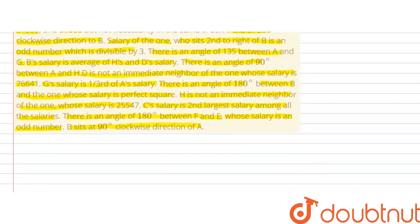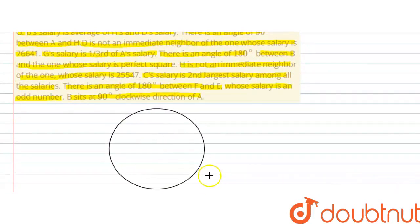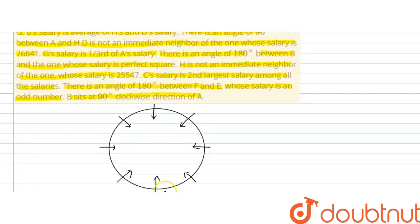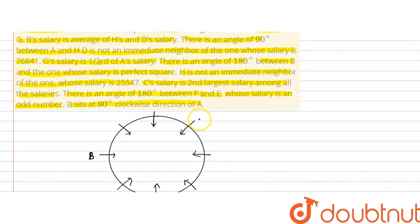This is a sitting arrangement question, so let's draw the arrangement. There is a circular table with 8 persons, all facing towards the center. B sits at 90 degrees clockwise of A, so we first fix A's position. Moving 90 degrees clockwise from A gives us B's position. Then moving 135 degrees clockwise from B gives us F's position.